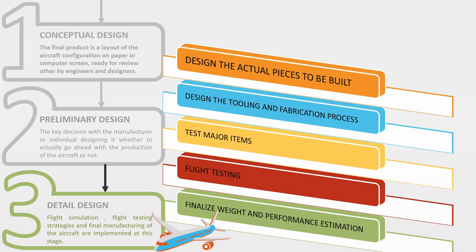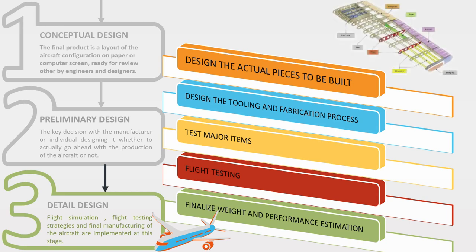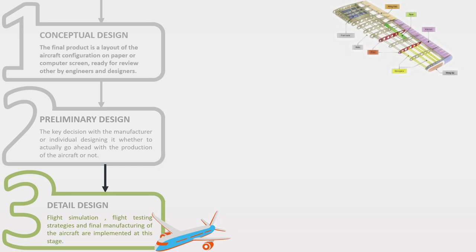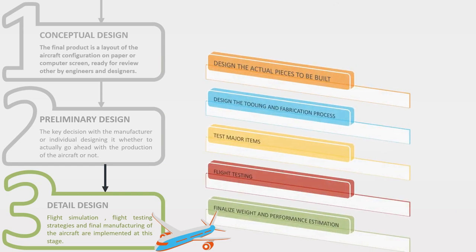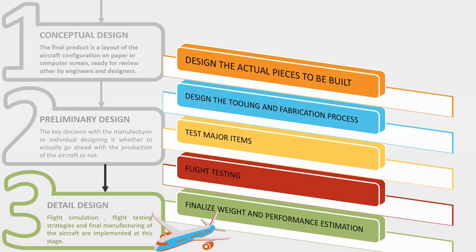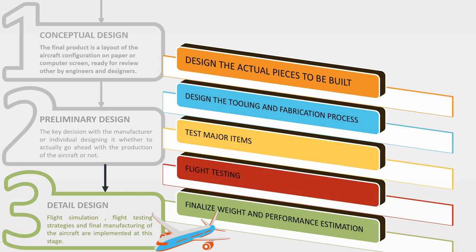Detailed design also determines the design and location of frames, spars, ribs, and other structural elements. It undergoes flight simulation and flight testing at this stage. Not only that, it is also tested through CFD integration and the finite element method to achieve and find the cost-effectiveness of the design in a shorter time period.